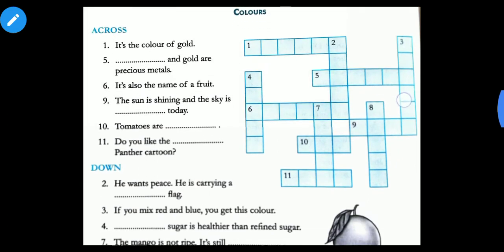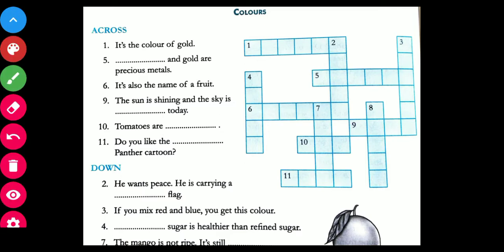Now let's see the first one. It's the color of gold. What is the color of gold? It's yellow. Next, dash and gold are precious metal. So silver and gold are precious metals.